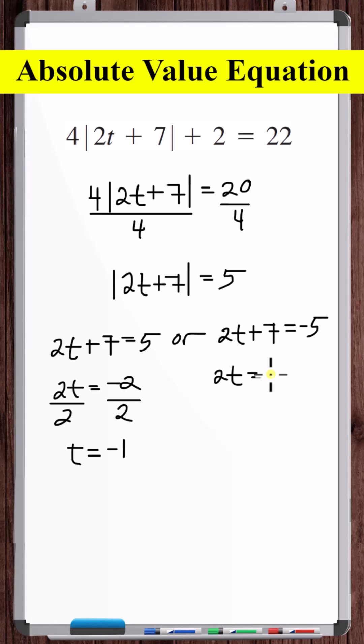Let's solve this equation. Subtract 7 from both sides. Divide both sides by 2. So t equals minus 6 is also a potential answer.